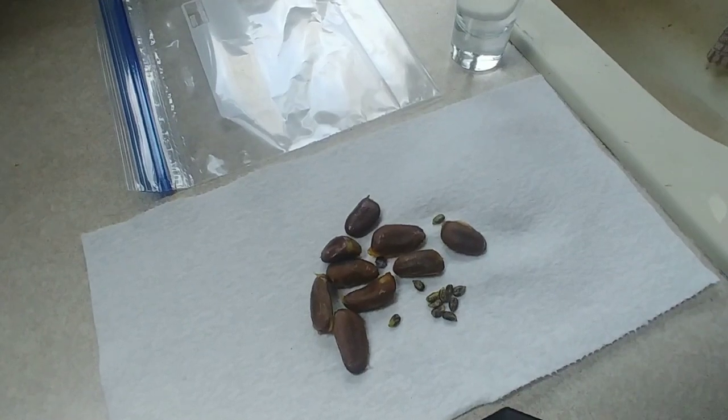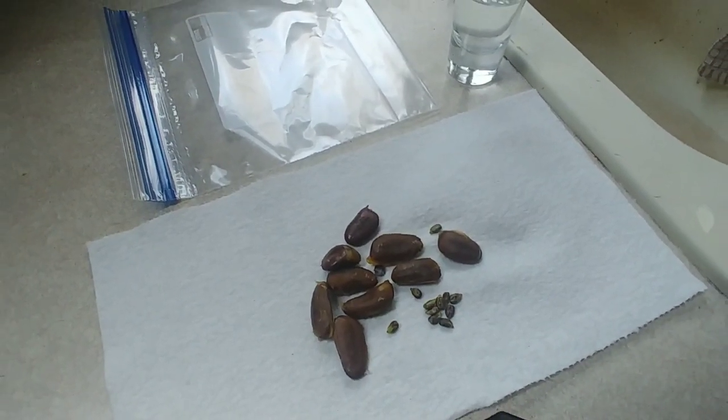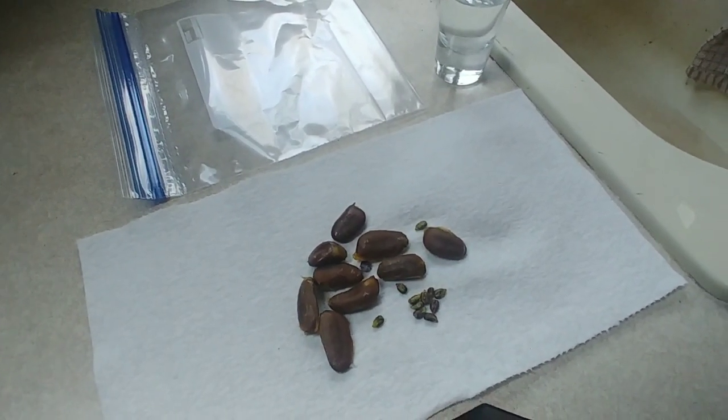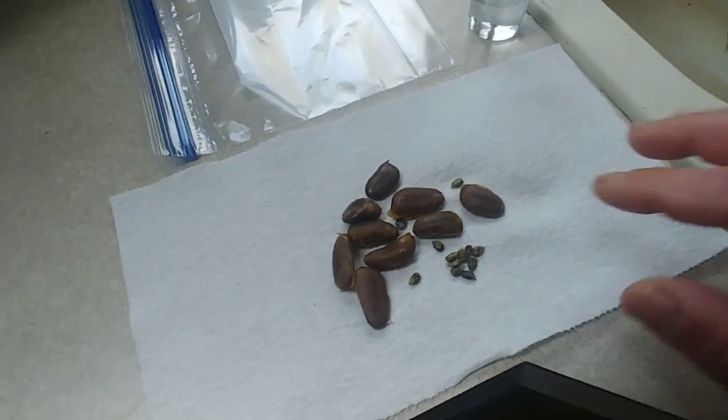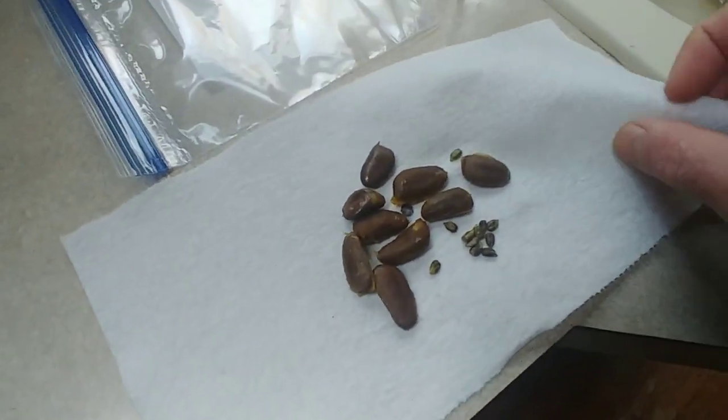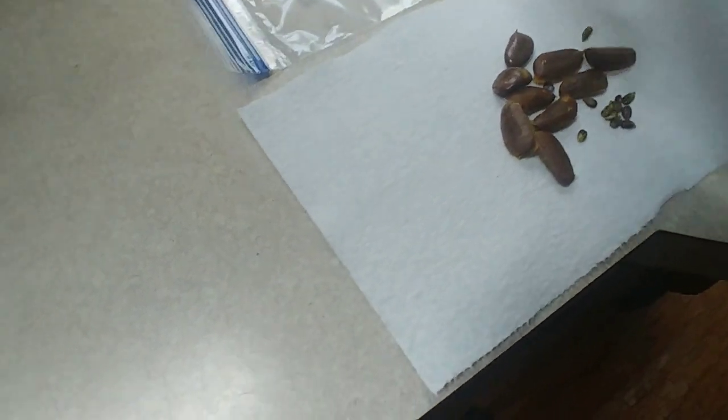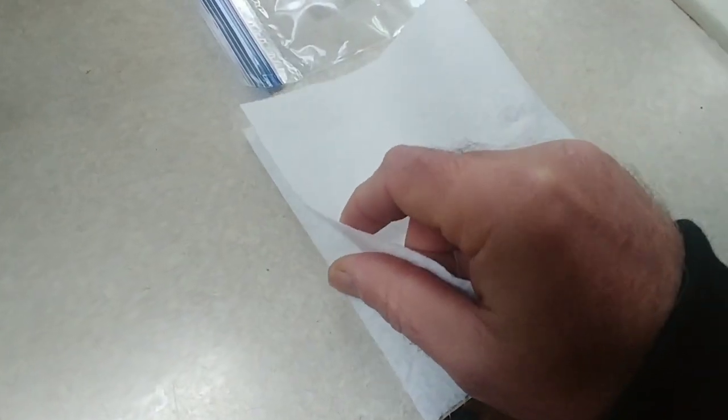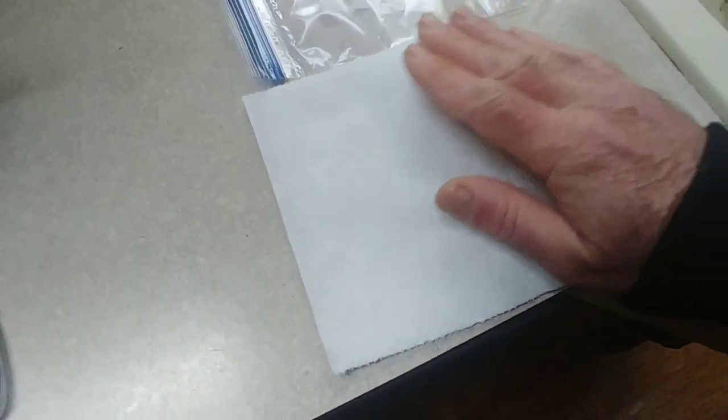So the way that you stratify seeds is generally what I do is over winter while the seeds are indoors, I lay them on a paper towel, then we fold the paper towel over onto itself so that the seeds are kind of contained mostly in the bottom part of the paper towel.